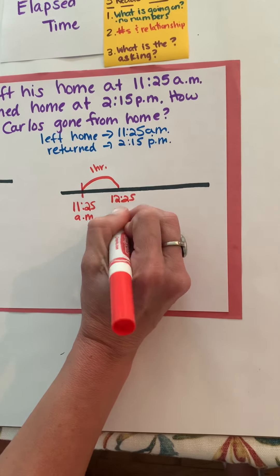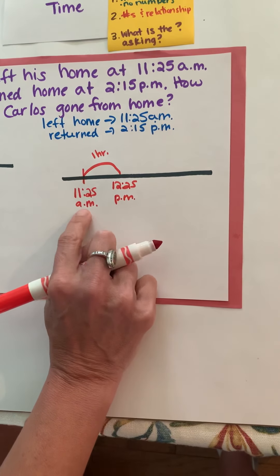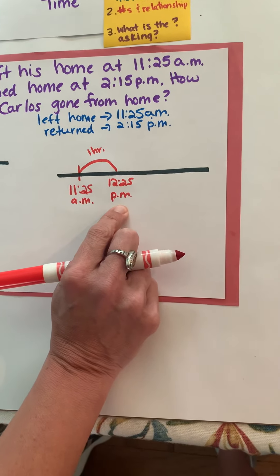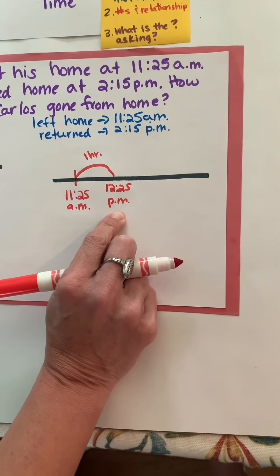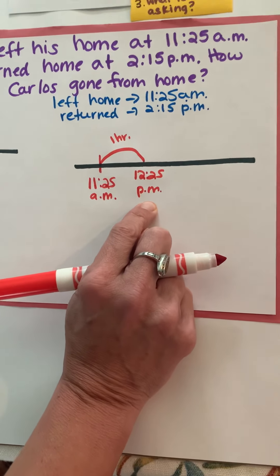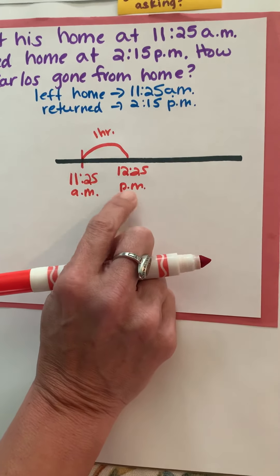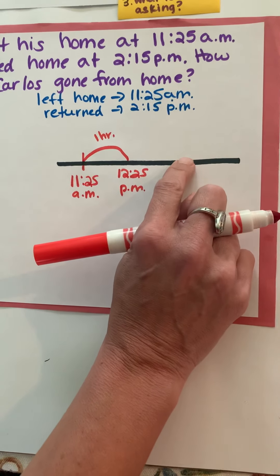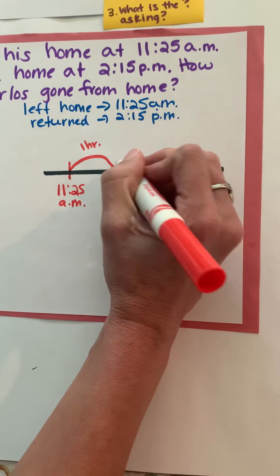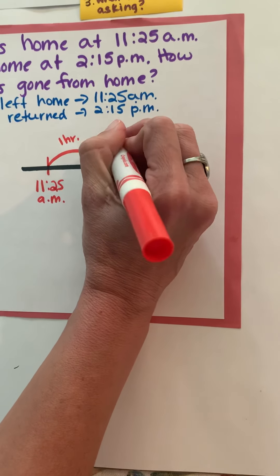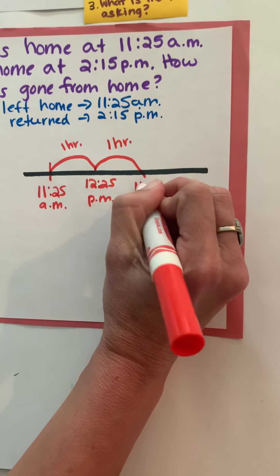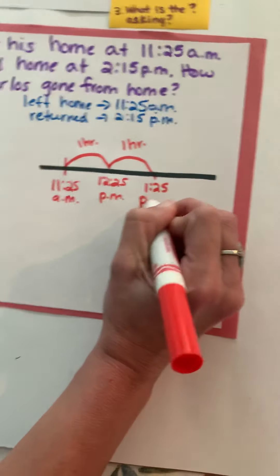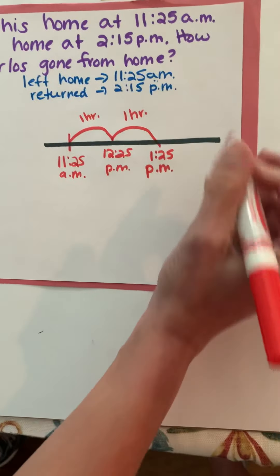Now because I crossed over 12 o'clock I moved from a.m. to p.m. so make sure you do that. Watch out for that when you are solving these types of problems you do want to make sure you get your a.m. and p.m. correct. So that's 12:25. Now if I can jump again to 1:25, another hour, I'm still in p.m. because I did not cross over at 12 o'clock.